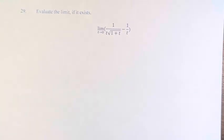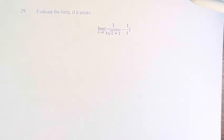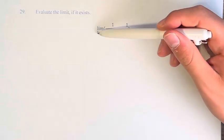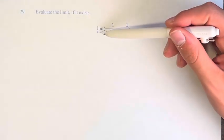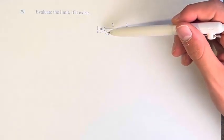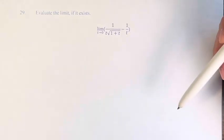Hello and welcome back to another video. In this problem, we're asked to evaluate the limit if it exists. We have the limit as t approaches 0 of 1 over t times the square root of 1 plus t, minus 1 over t.